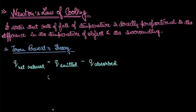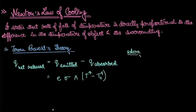So Q_net equals e·σ·A·(T⁴ - T₀⁴), where e is emissivity — the amount of heat the object can emit — σ is Stefan's constant, A is the area exposed to incident energy, T is the temperature of the body, and T₀ is the temperature of the surrounding.